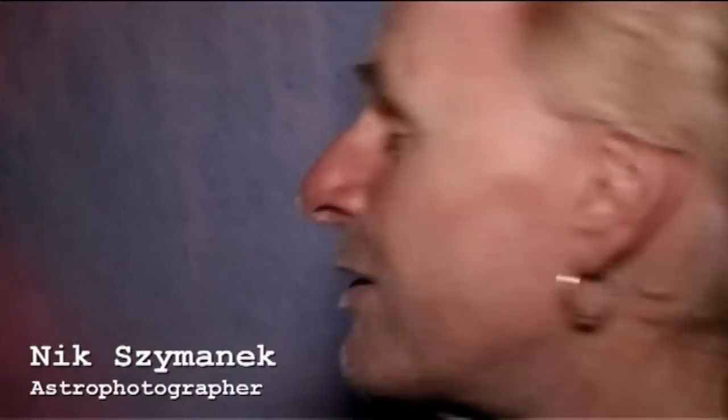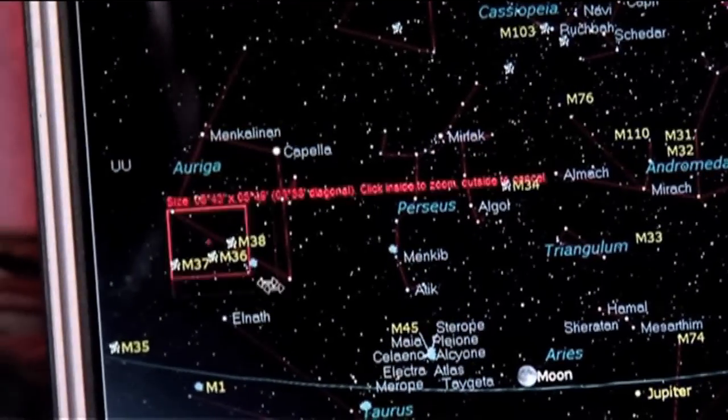Okay, we're going to have a look at a nice open cluster in the constellation of Auriga, the Charioteer. M37, one of three very nice clusters in the constellation.